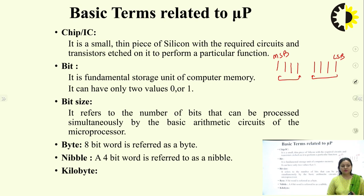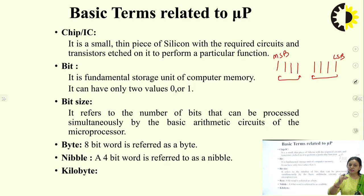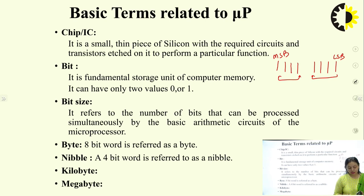A kilobyte refers to memory size: 1 KB means 1024 locations where each location can store one byte of data. Kilo means 1024 locations; byte means each location can store 8-bit data. Similarly, a megabyte represents a larger number of locations stacked up, with each location having the same byte capacity.